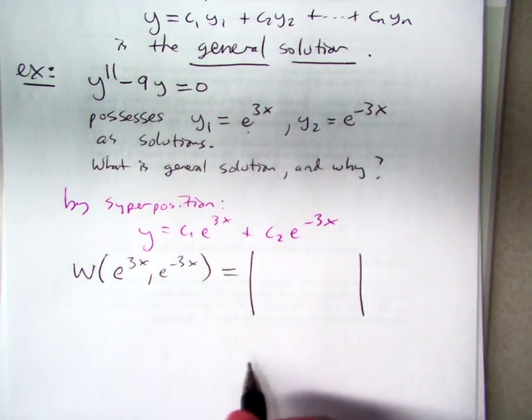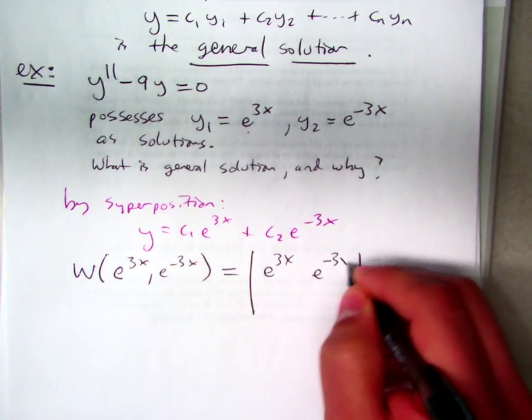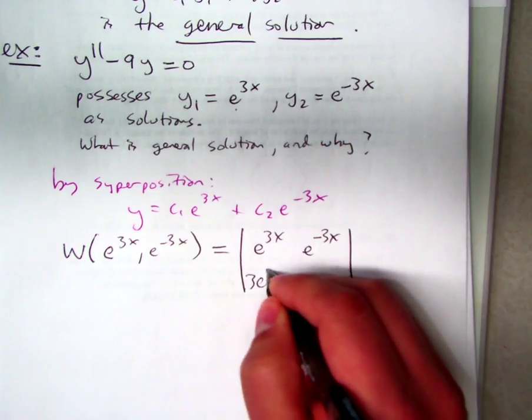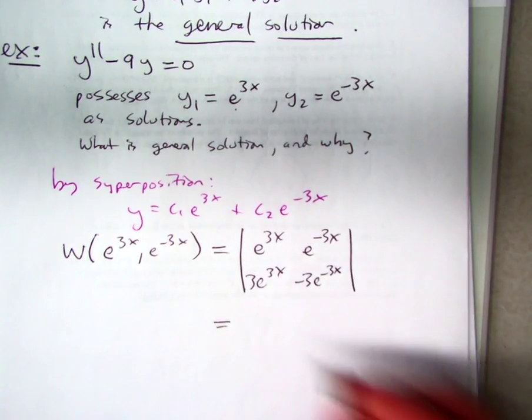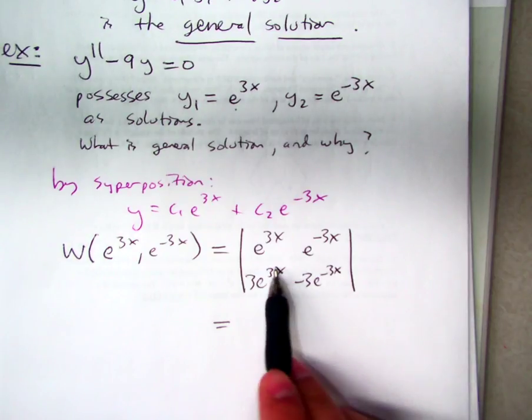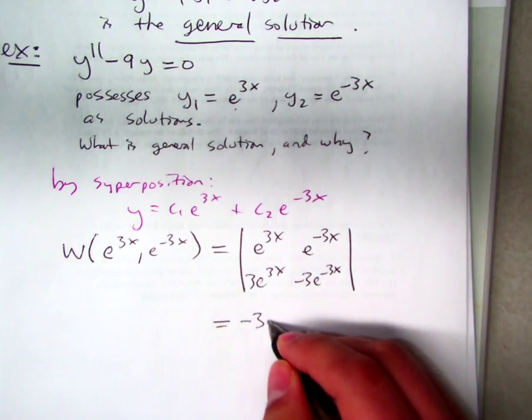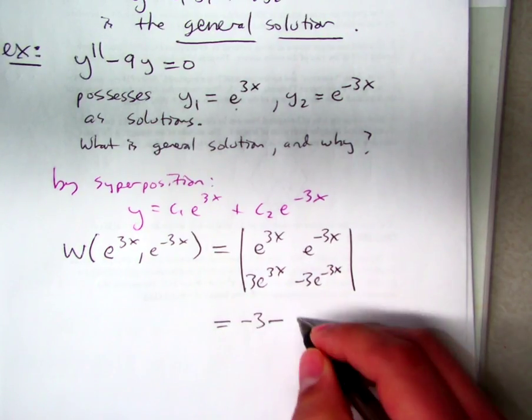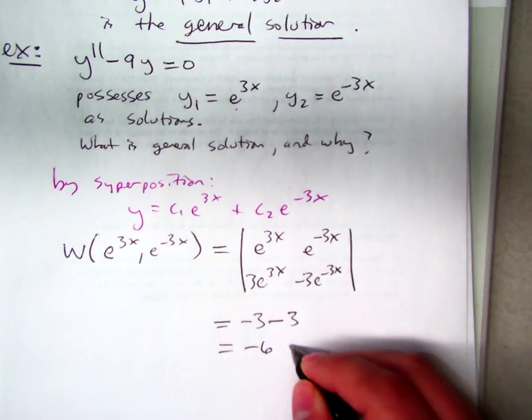So we do the determinant of e to the 3x, e to the minus 3x, and then what's this bottom row? So the determinant there, we'd get negative 3 times e to the 0, so just negative 3, minus 3 times e to the 0, so just 3. So that equals negative 6, which never equals 0.